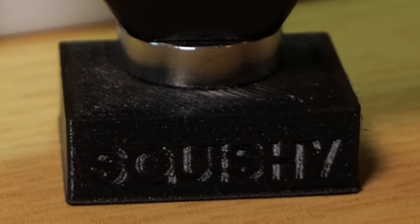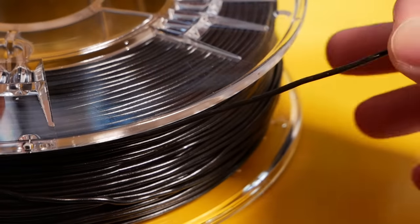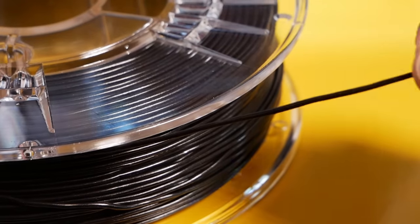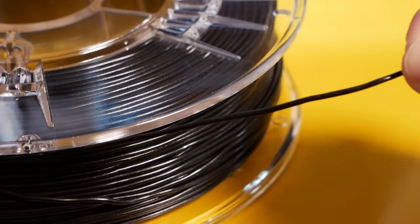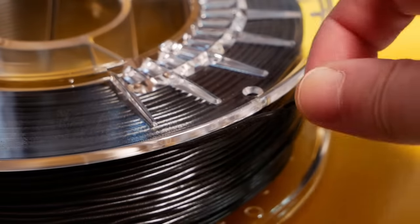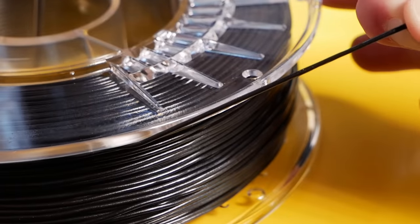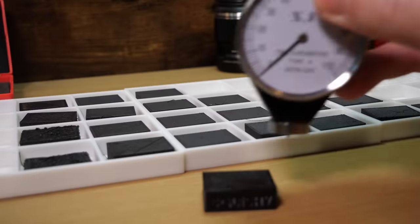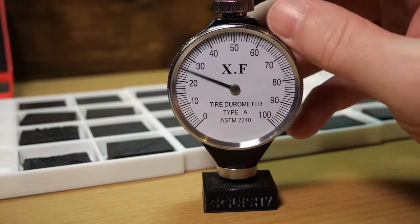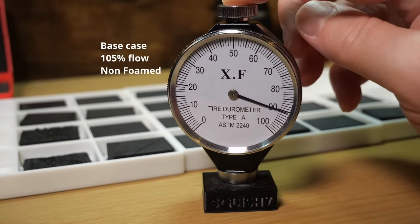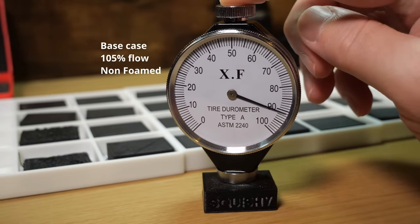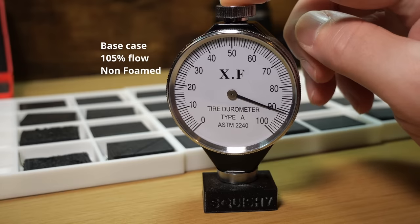These are printed with 100% infill and for the control case, since TPU always under extrudes by default—I've explained it before—it's printed at 105% flow rate, at 220C, which is supposedly below the foam point of the VarioShore. This piece is very, very solid. We should let the meter do the talking though, it's supposed to be 92a.